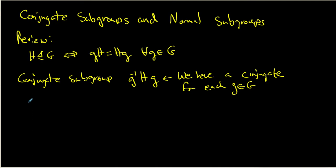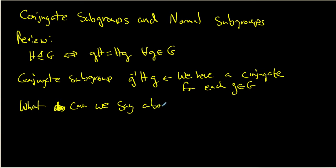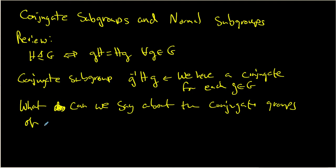What I want to do is look at what the conjugate subgroups for a particular normal subgroup look like. What can we say about the conjugate subgroups of a normal subgroup?